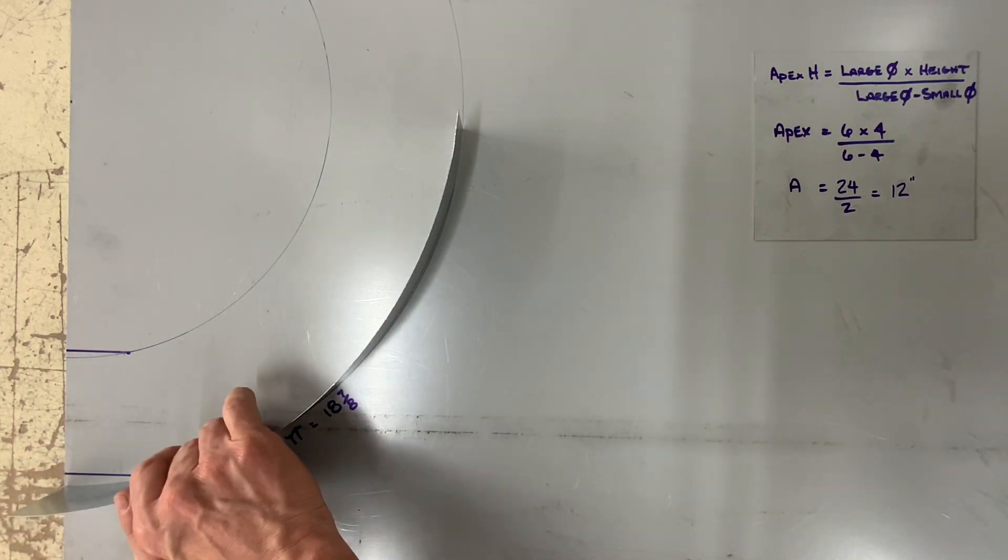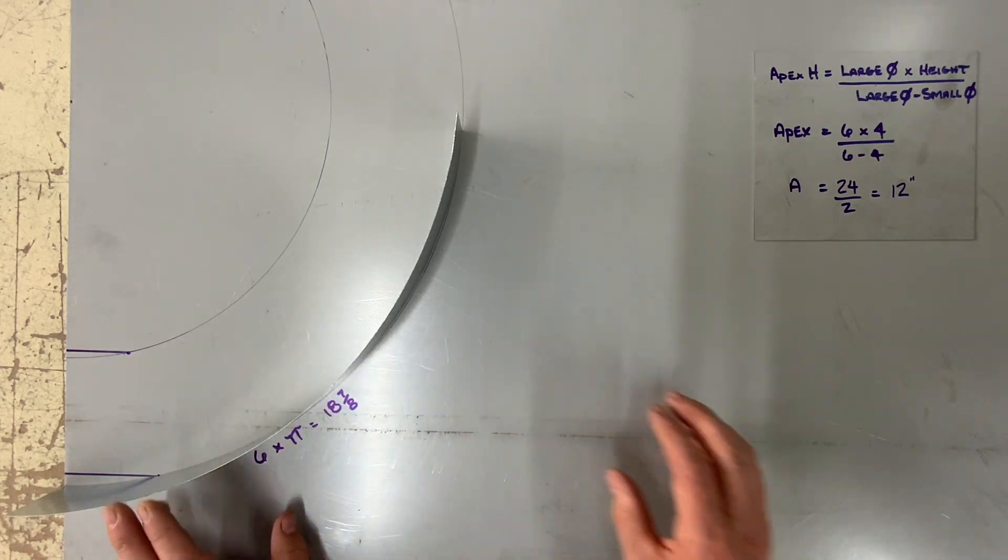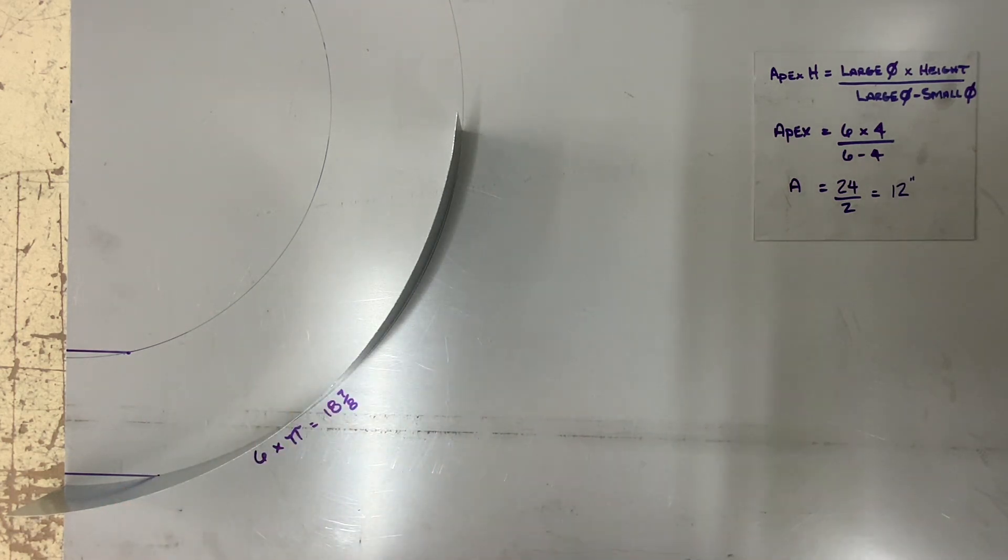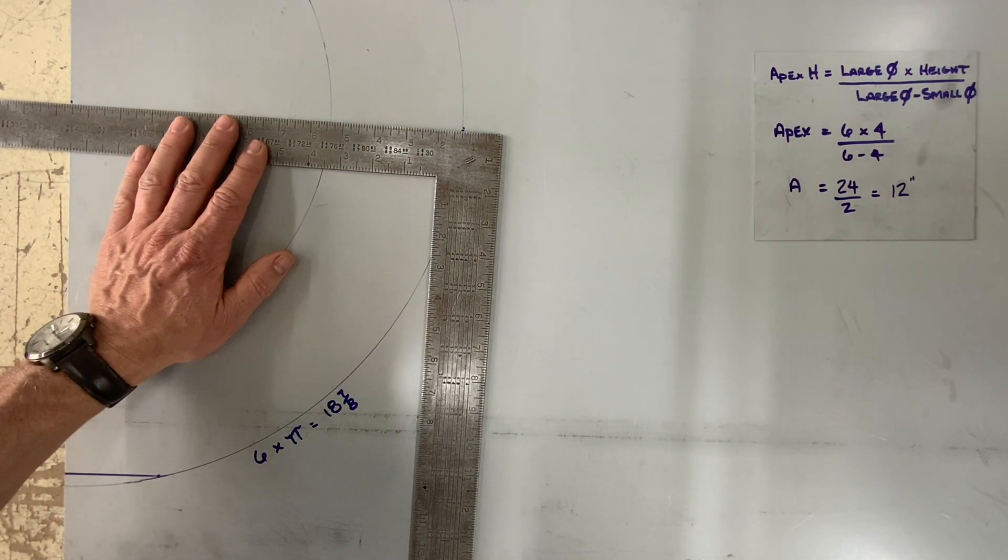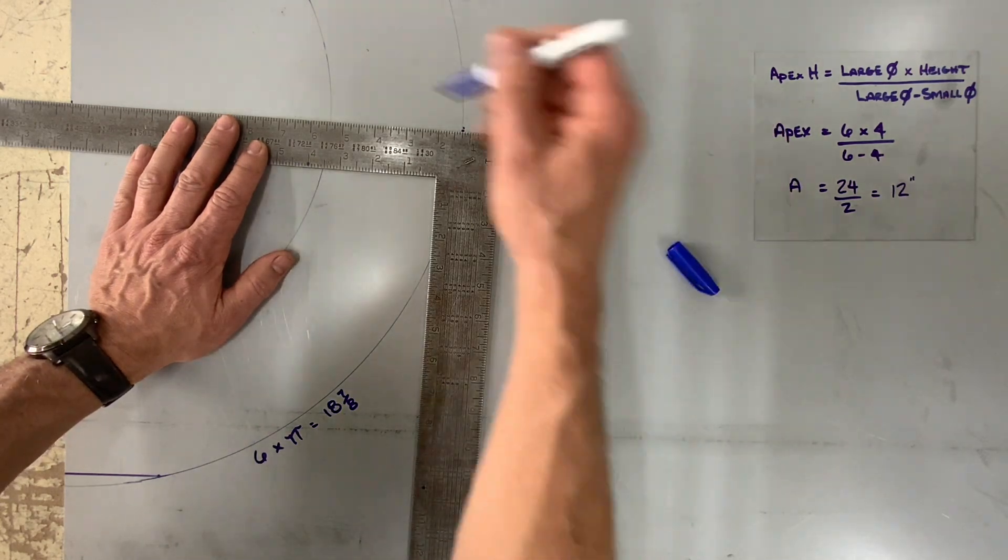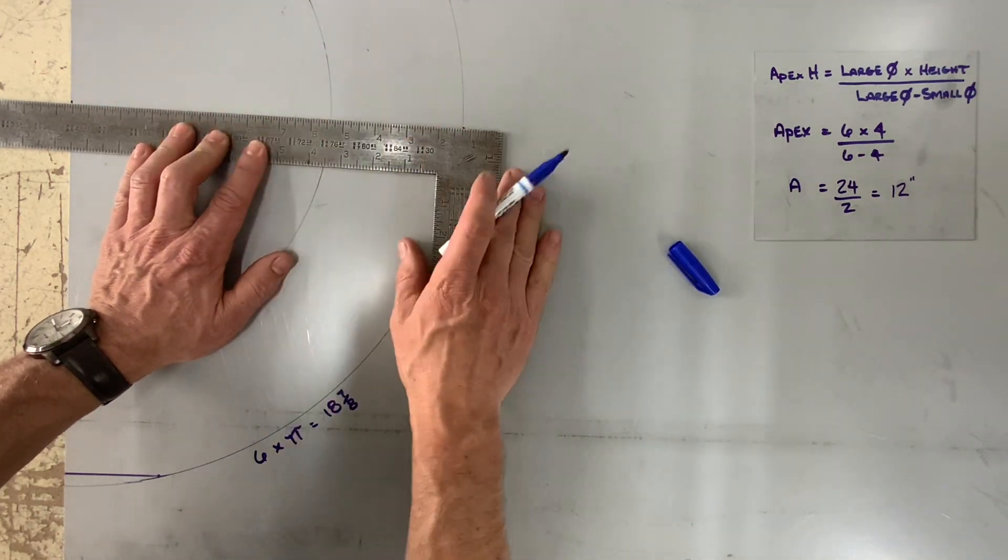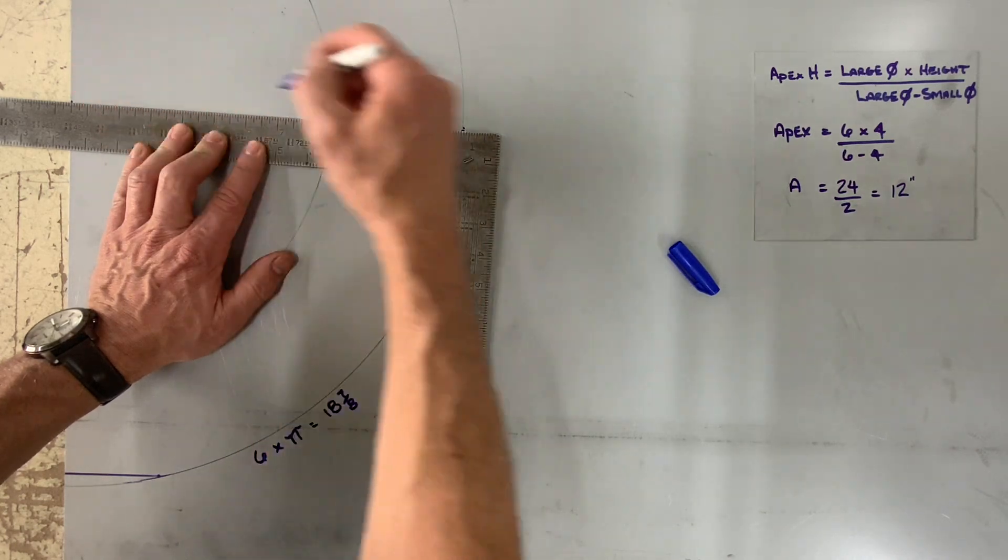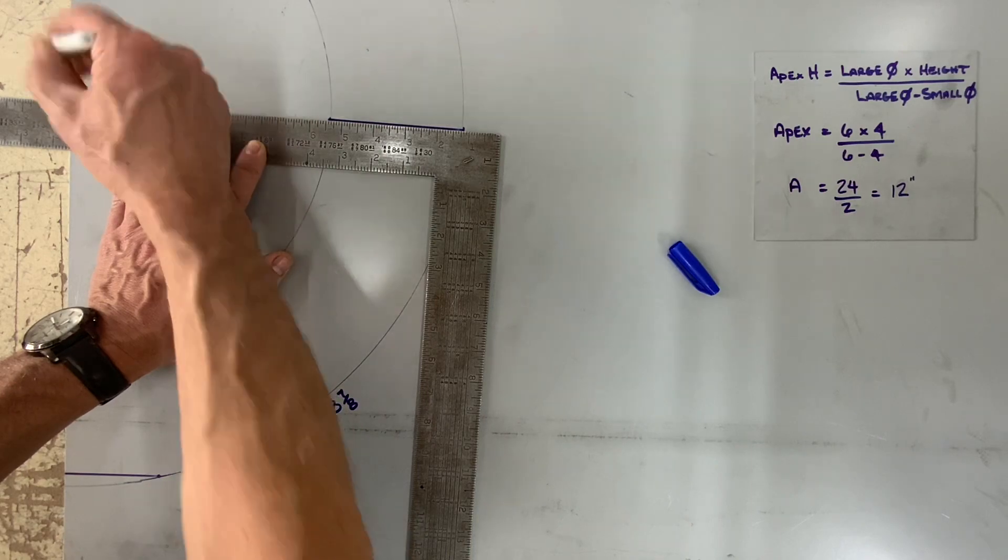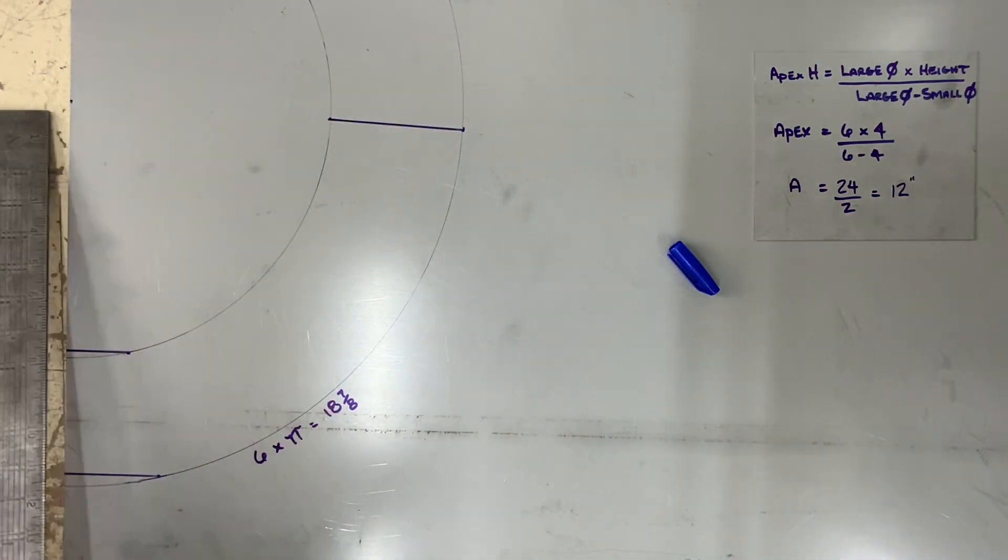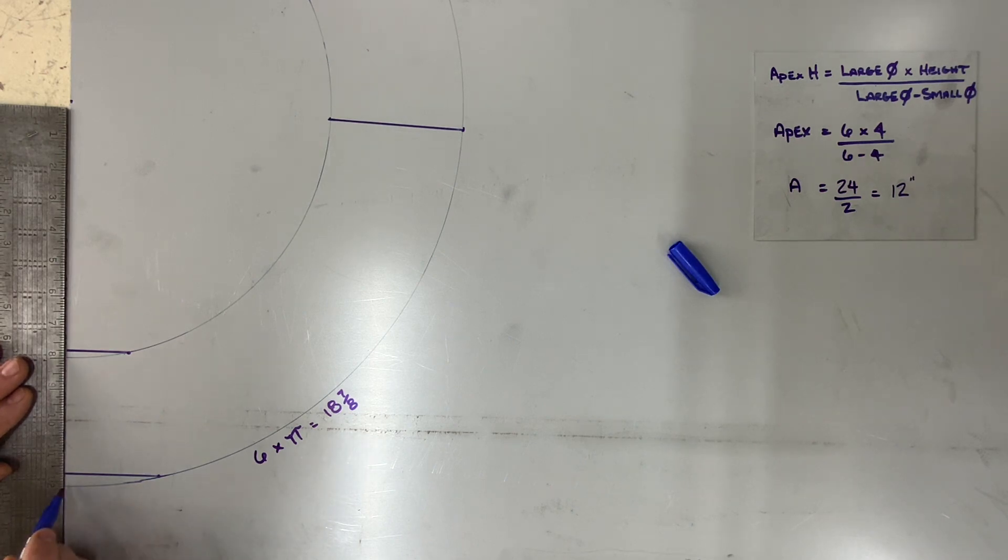Now it's up to you to start and stop the eighteen and seven eighths with whichever method you choose: stepping off, which is less accurate, the circumference rule, or this strip of metal. Make a mark like we did earlier and draw a line pointing towards the apex. The net pattern will start at the edge of the metal in this case.